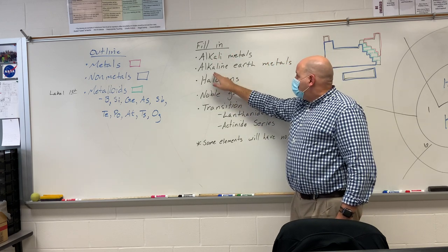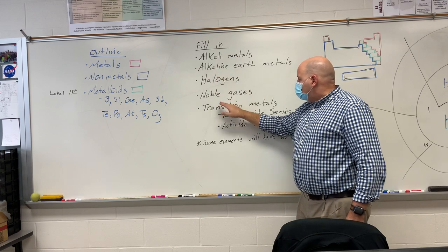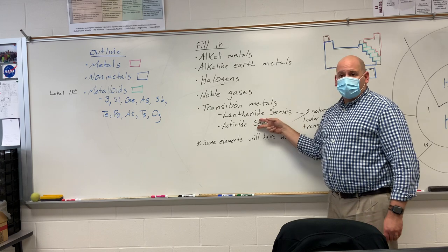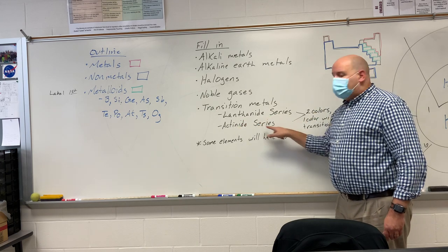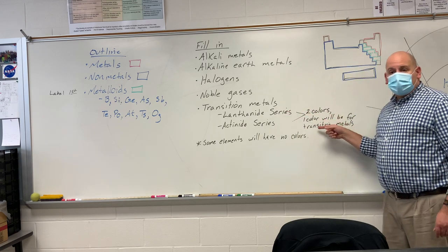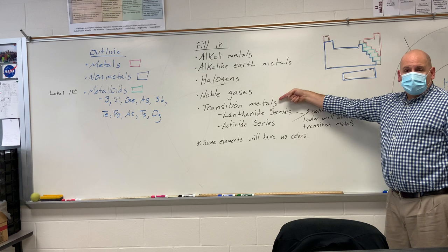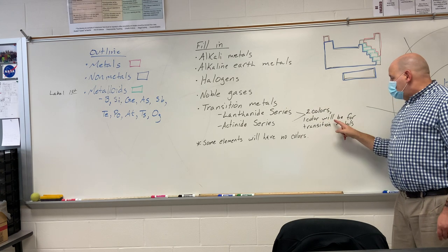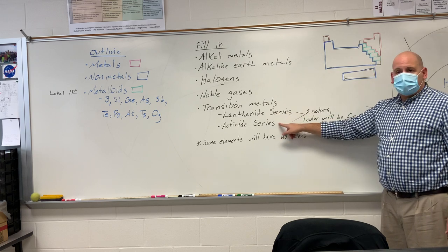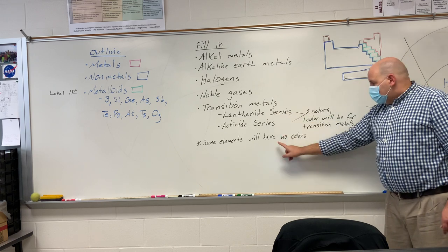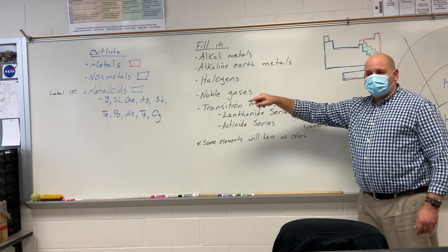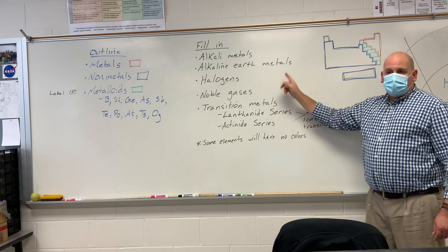You're going to outline metals, alkali metals, halogens, noble gases, and transition metals. Now transition metals have two subcategories: the lanthanides and the actinides. These two rows will have two colors — one will be the color you use for transition metals, then a second color just for the lanthanides, and another separate color just for the actinides. Some elements will not have any fill color at all — they'll have an outline perimeter color but won't be filled in.